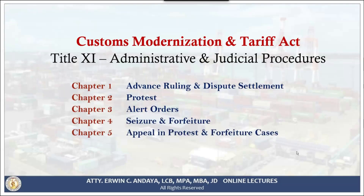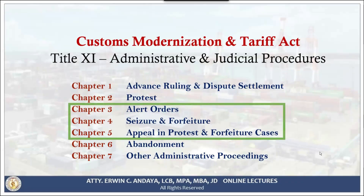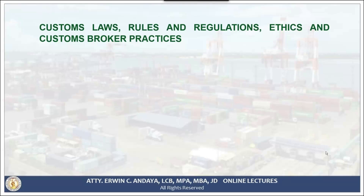Title 11 has various chapters: Chapter 1, Advanced Ruling and Dispute Settlement; Chapter 2, On Protest; Chapter 3, Alert Orders; Chapter 4, Seizure and Forfeiture; Chapter 5, Appeal in Protest and Forfeiture Cases; Chapter 6, Abandonment; and Chapter 7, Other Administrative Proceedings. For this morning, we will only tackle three chapters: Alert Orders, Seizure and Forfeiture, and Appeal in Protest and Forfeiture Cases. These topics are relevant to the CBLE — what future customs brokers should know on seizure and forfeiture proceedings.